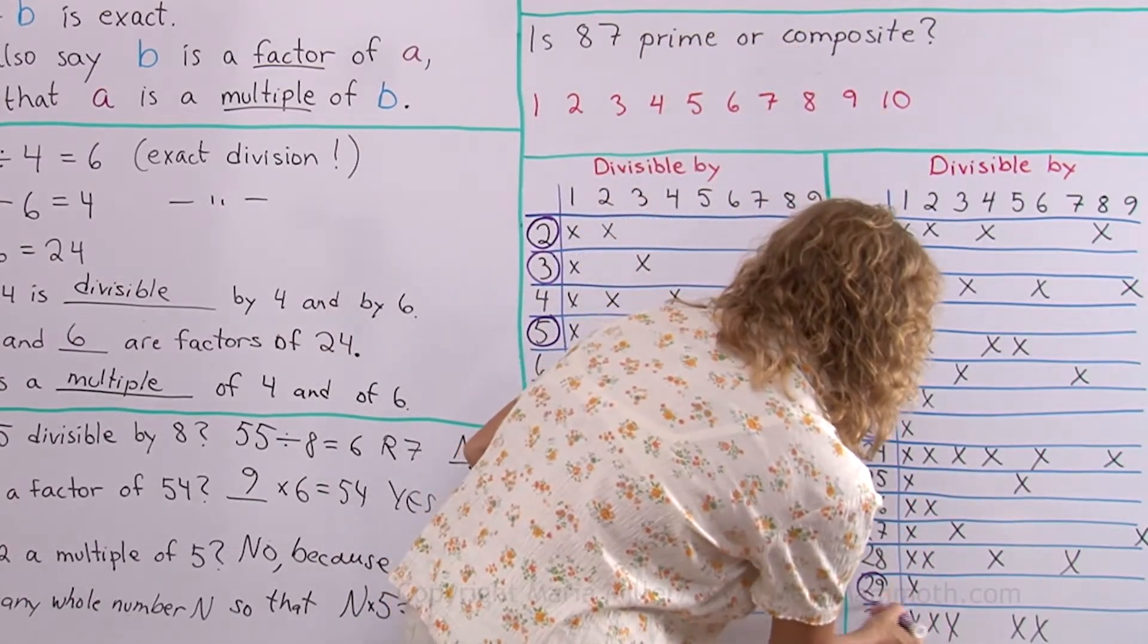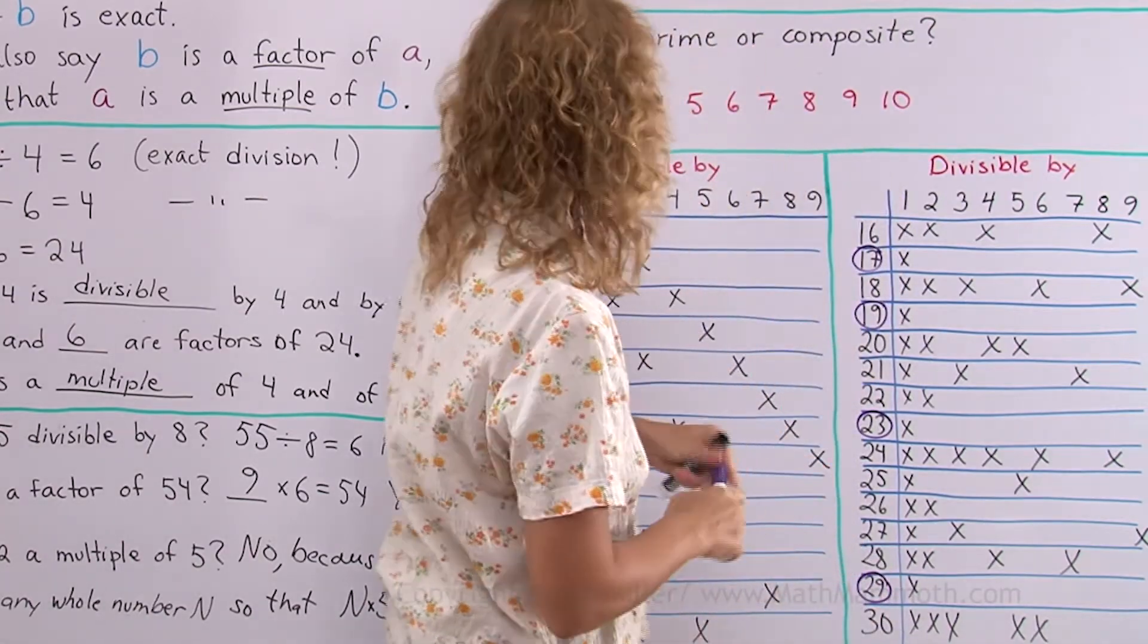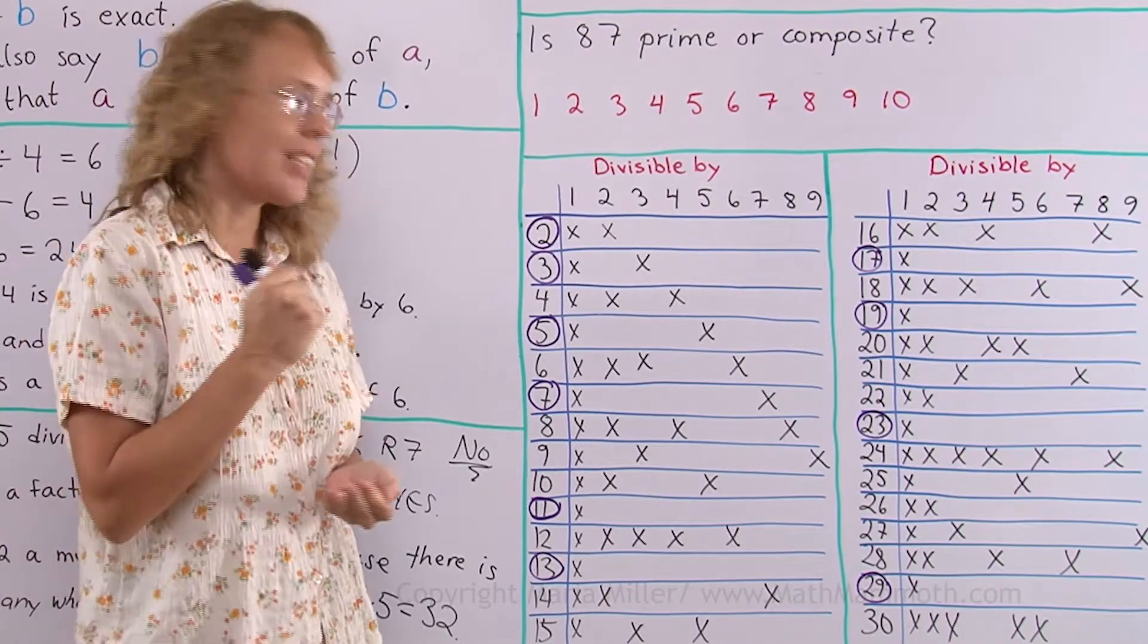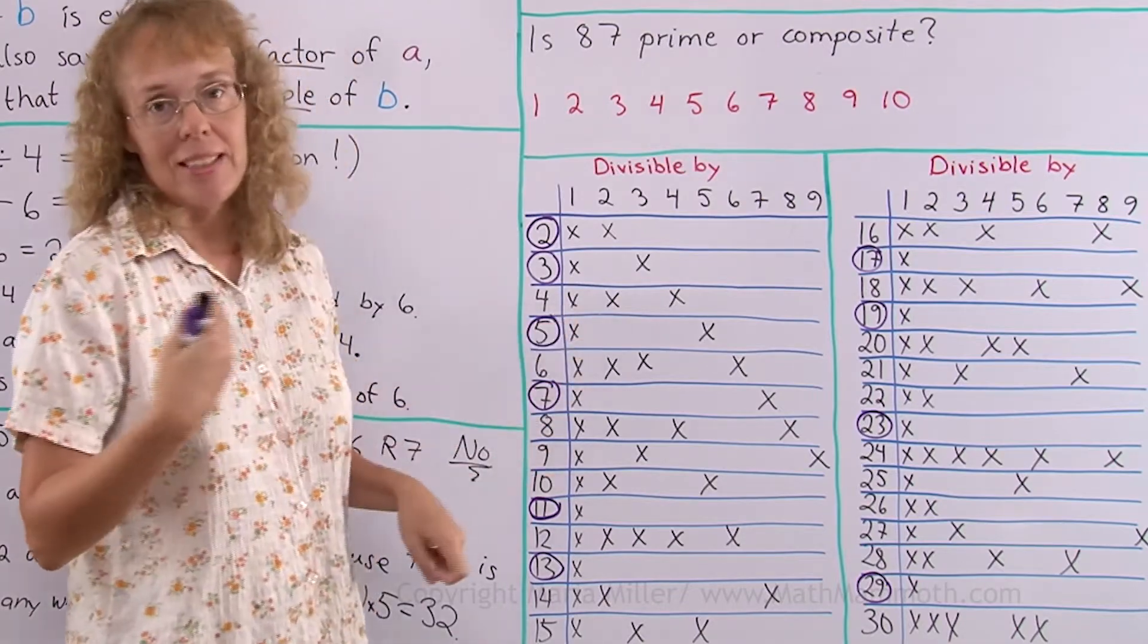These all... Oh, here. 29 is the last one on my chart. So, these numbers are prime numbers because they are not divisible by anything else except by 1 and by themselves.